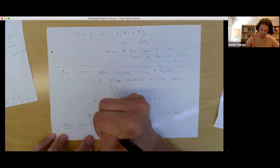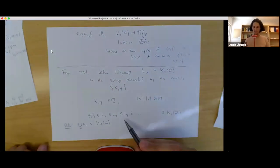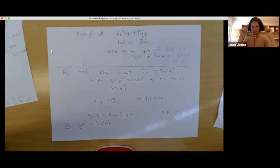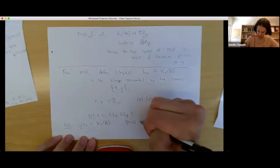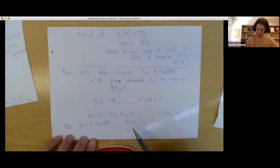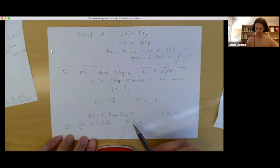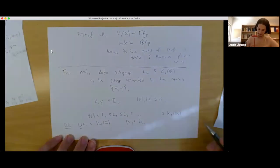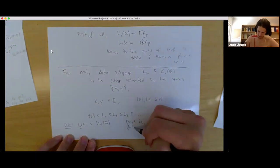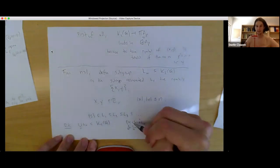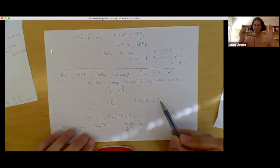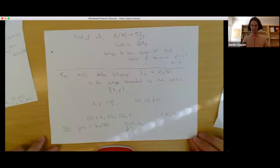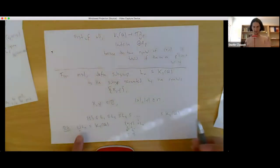Every element of K2(Q) lies in some L_N. Why? It suffices to show that every symbol {x, y} lies in some L_N, because K2 is generated by symbols. By bimultiplicativity we can reduce to the case where x and y are actually integers, and then any two integers have absolute value bounded by some N. So the filtration is exhaustive.